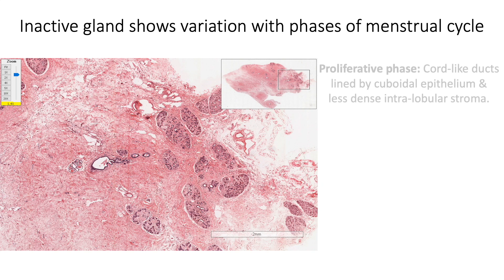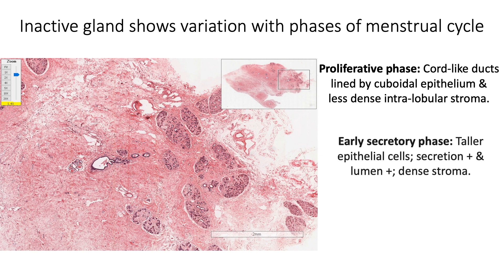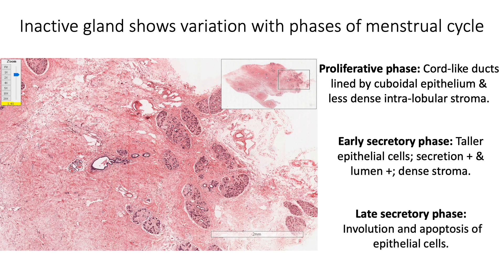In the proliferative phase, the cord-like ducts are lined by cuboidal epithelium, show no lumen, and the stroma is less dense. In the early secretory phase, the epithelial cells become taller and show a small amount of secretion; there is presence of lumen in the ducts and stroma becomes dense. In the late secretory phase, the epithelial cells undergo involution and apoptosis.